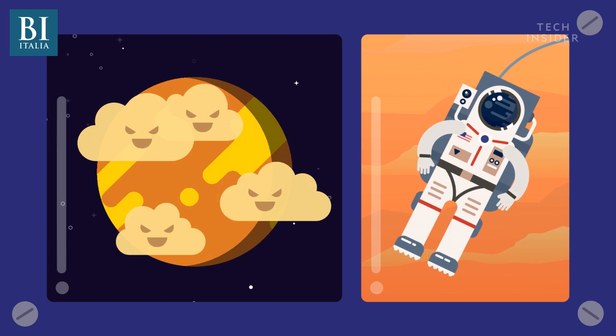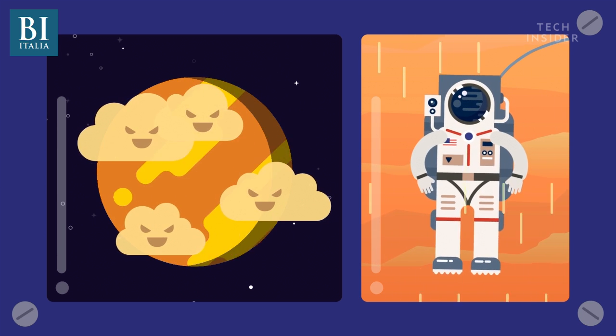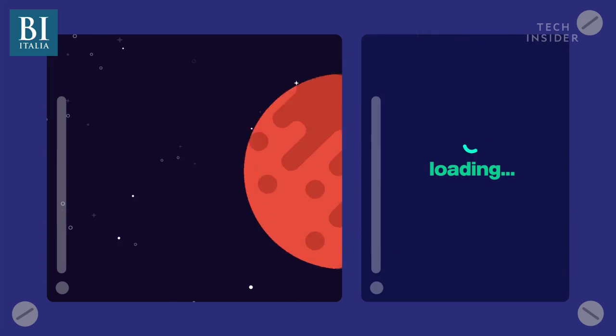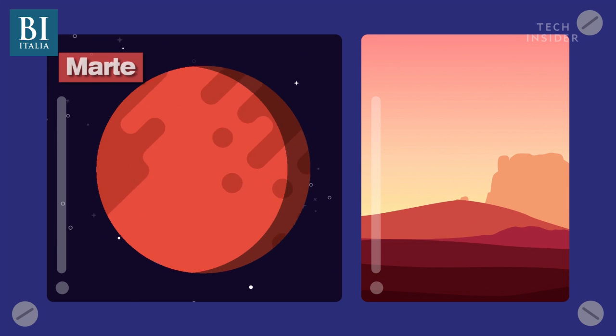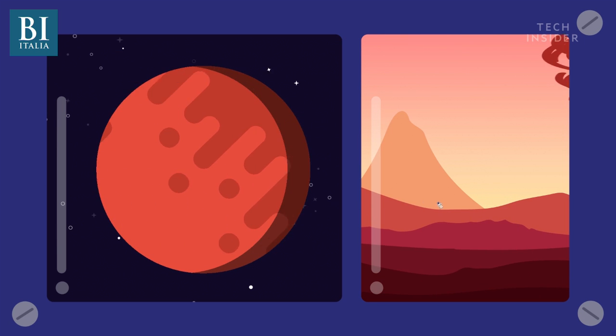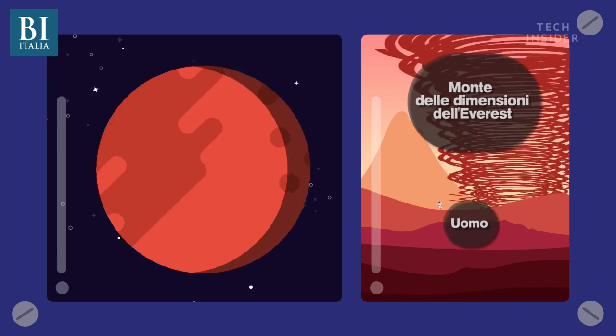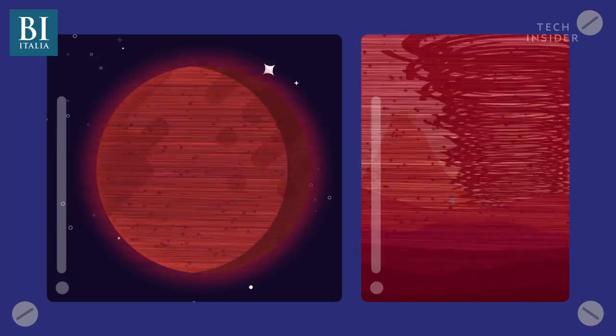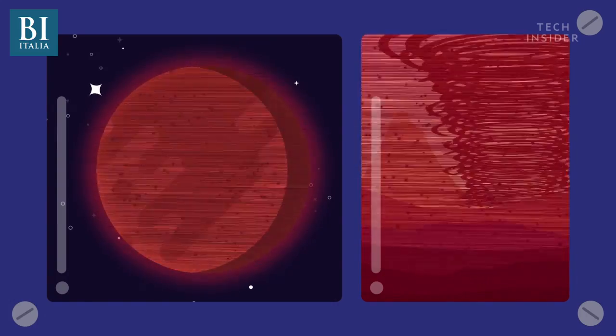These clouds rain sulfuric acid that's so corrosive it would eat through your skin on contact. On Mars, the surface is rocky and desert-like, so wind can stir up loose soil creating giant dust devils twice the height of Mount Everest. But that's nothing compared to the dust storms that sometimes engulf the entire planet for months at a time.